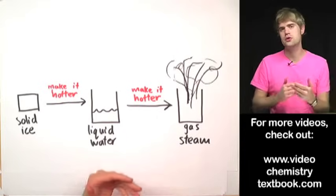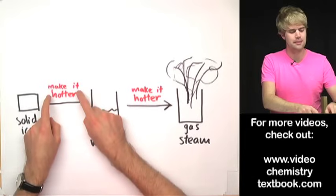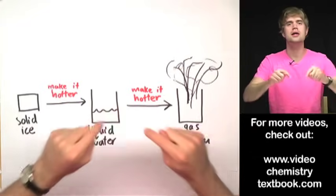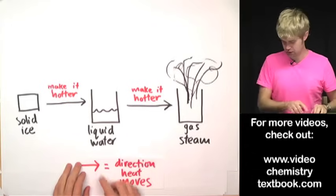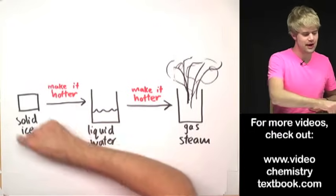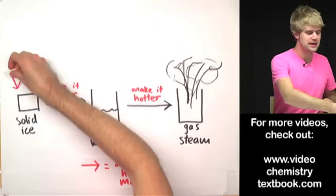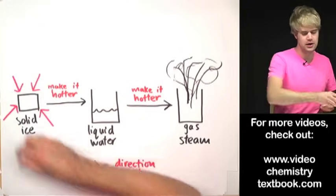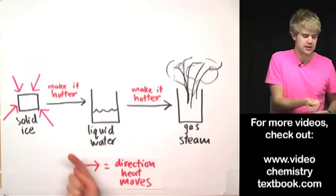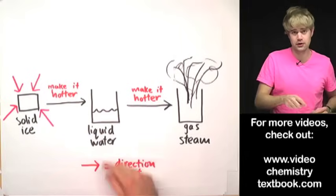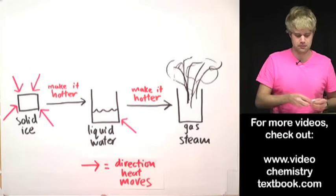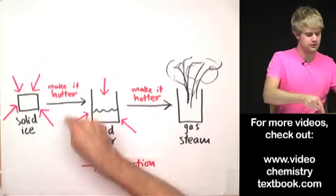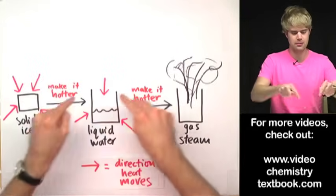When we want to figure out whether something is exothermic or endothermic, it's not as useful to think about whether we need to make something hotter or colder. Instead, it's best to think about the direction that heat is moving. Let's use a red arrow to show the direction that heat moves. Here I have this solid ice and when I want to turn it into water I've got to put heat into it — maybe from a stove, the sun, or a fire — the heat is moving into the solid ice and melting it. And then once I have liquid water I have to put heat into that in order to get steam. So heat is moving from the environment into the ice, and heat is moving from the environment into the water.